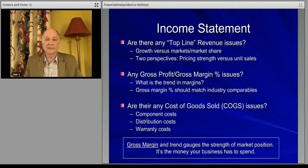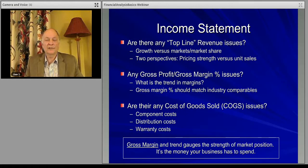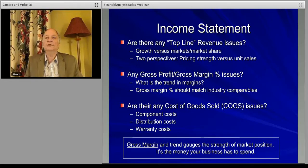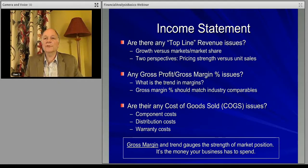Let's start with top-line revenue issues. We look at growth, we look at market share — we've talked about those things before. What does revenue growth tell us? There are two underlying drivers in revenue growth. One of them is how many units you're actually selling. If you are, for example, an automobile company like Toyota, you have vehicles that you're selling — cars, automobiles. You're selling a certain number of each model: so many Camrys, so many Avalons, so many trucks. That is one of the drivers that tells you how well your firm is doing in terms of how much product is going out the door.